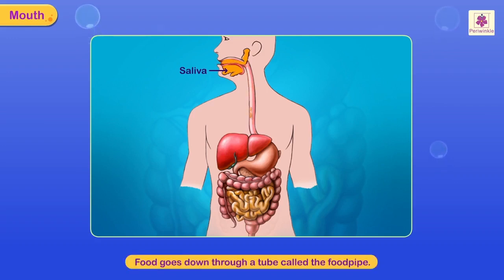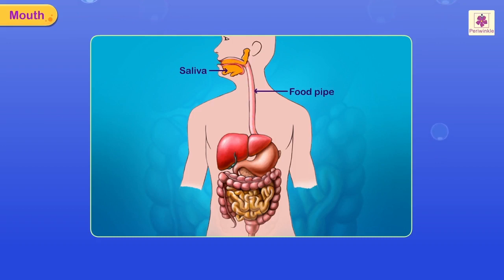After the food has been chewed properly, you swallow it. It goes down a tube called the food pipe, which carries the food to the stomach.